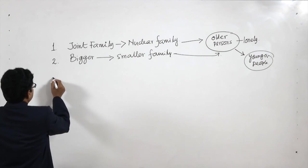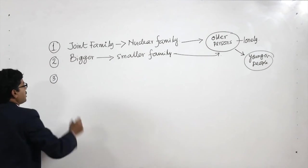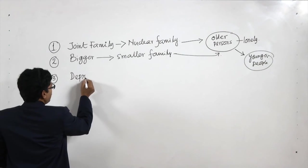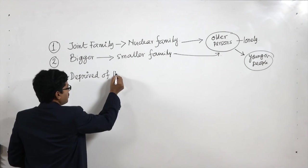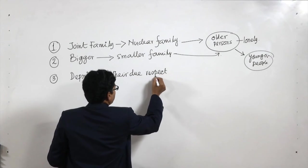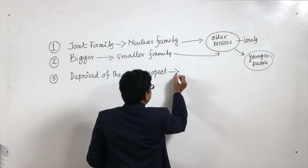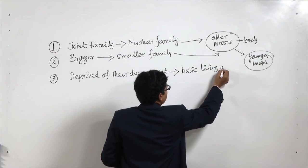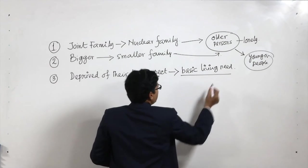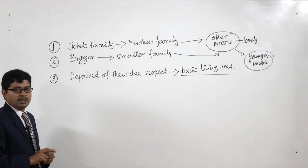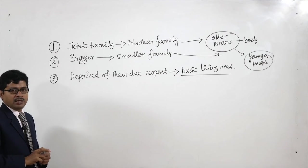The third reason is that in some cases we have seen that old age people or senior citizens are also deprived of their due respect — and not only respect, sometimes they are even humiliated by their own children. They do not get their basic living needs met, and because of that we have found that in many cities old age people and senior citizens are living in extremely difficult life situations.